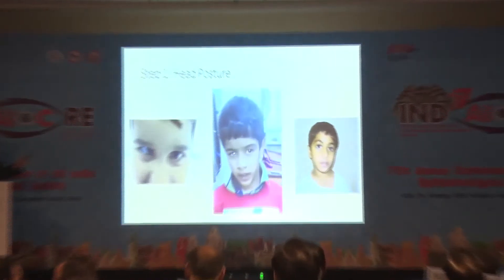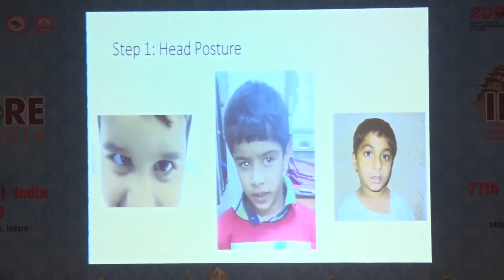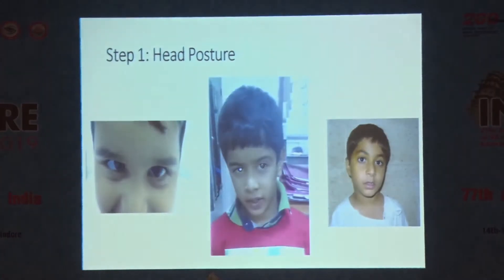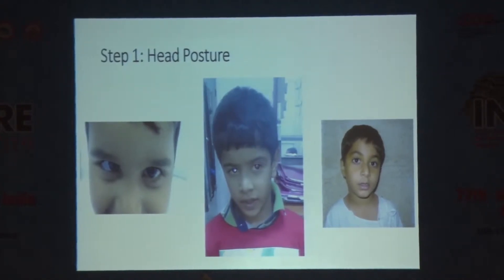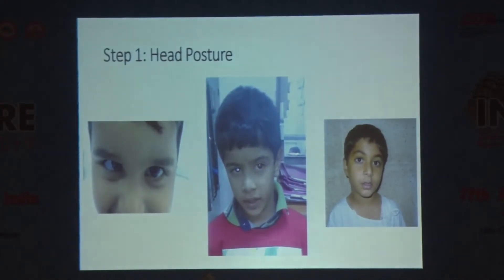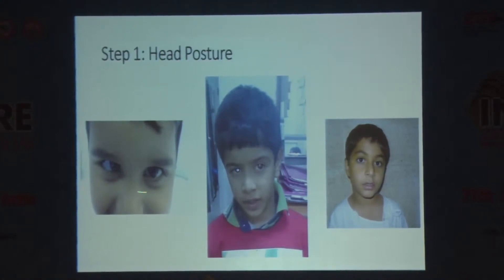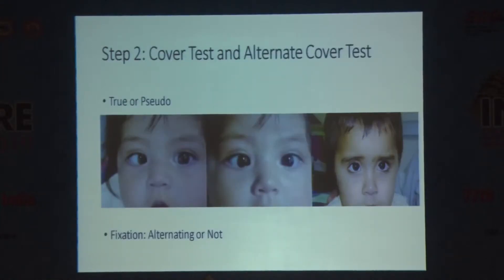I'll go through a few steps. Step zero is, of course, the vision and the refraction — that's a cycloplegic refraction, which has already been discussed. Step one is to look at the head posture, because this is when you want to observe the child before they realize you're watching. You need to look for a chin up or down, a tilt, or a turn.